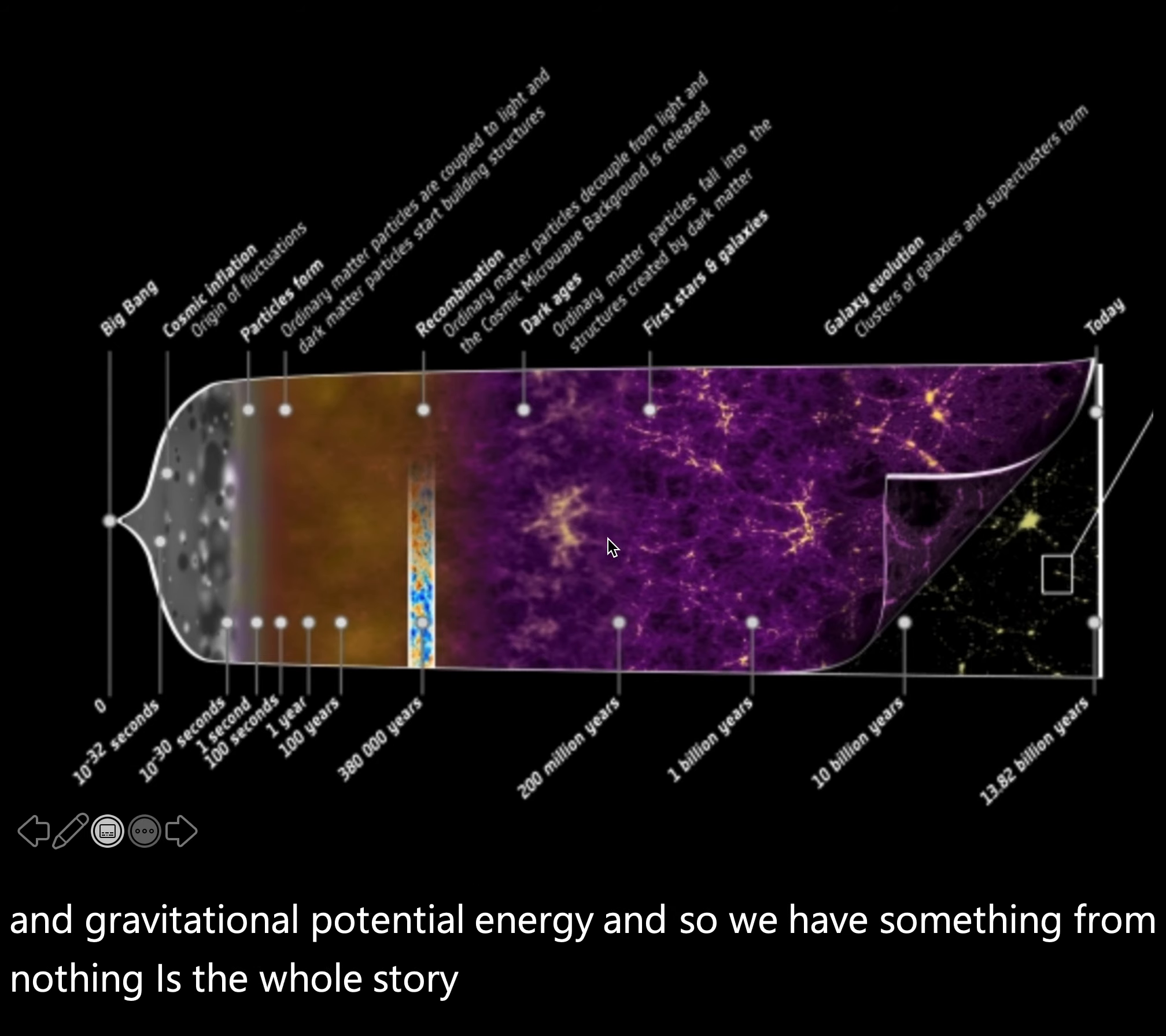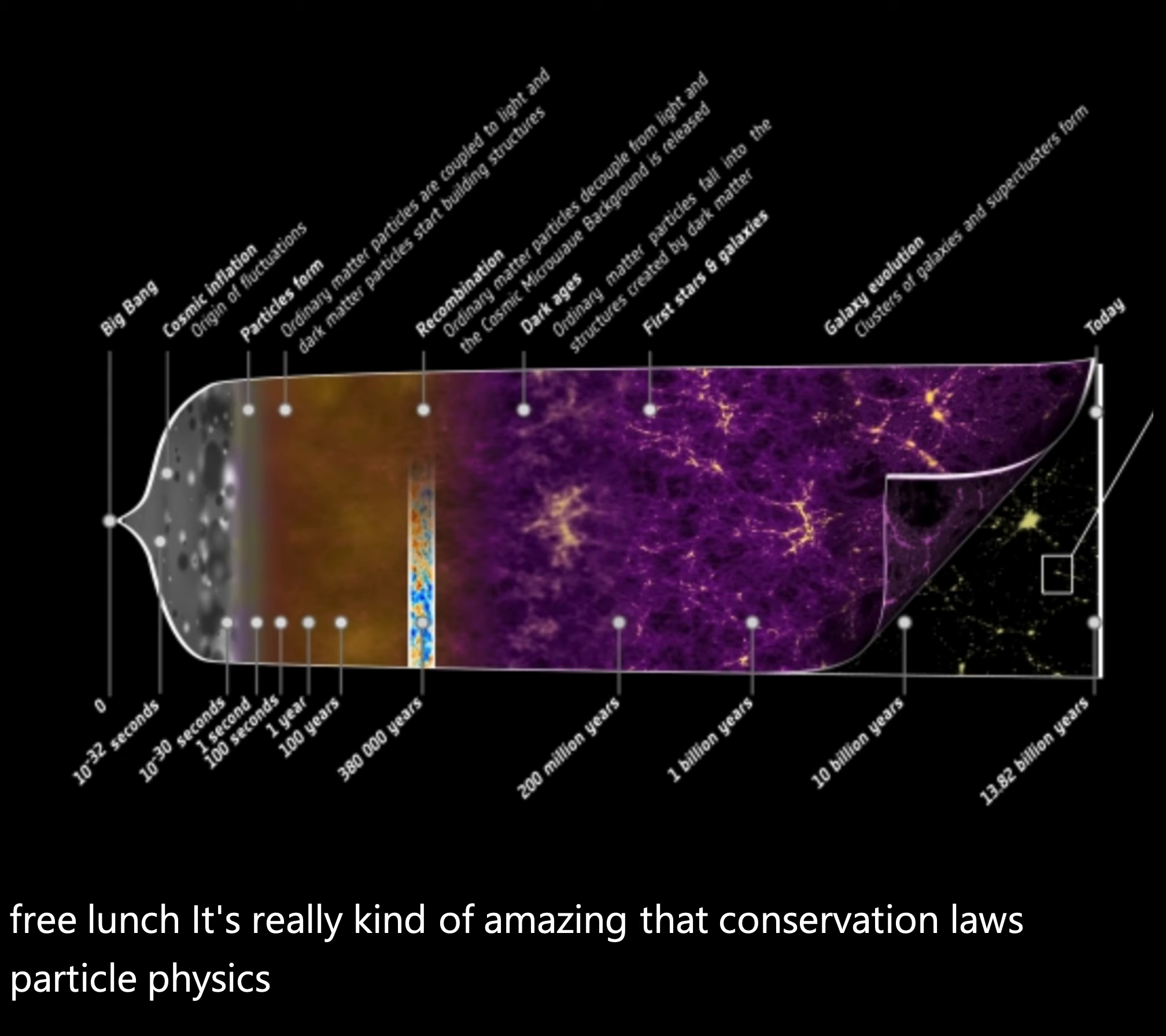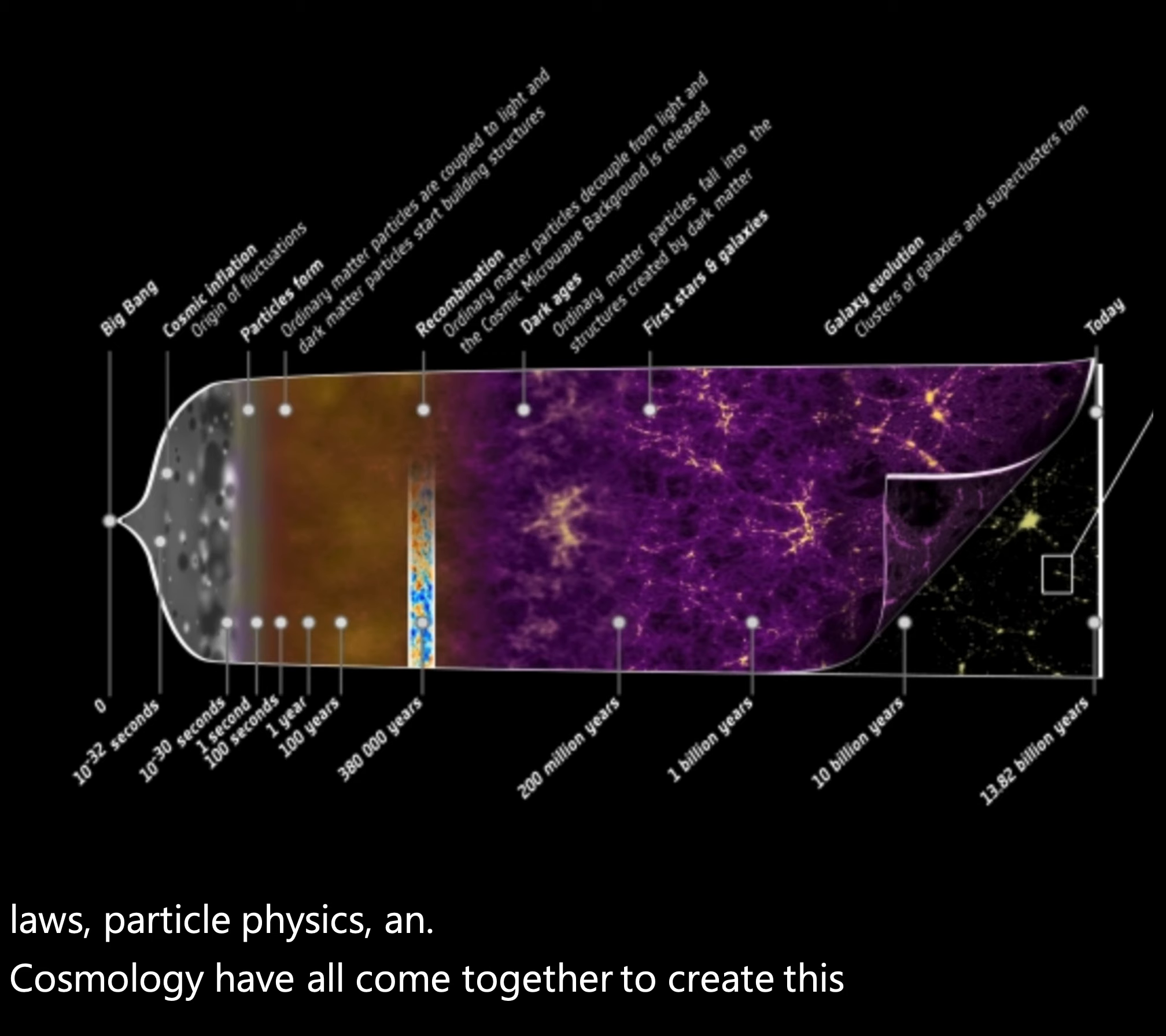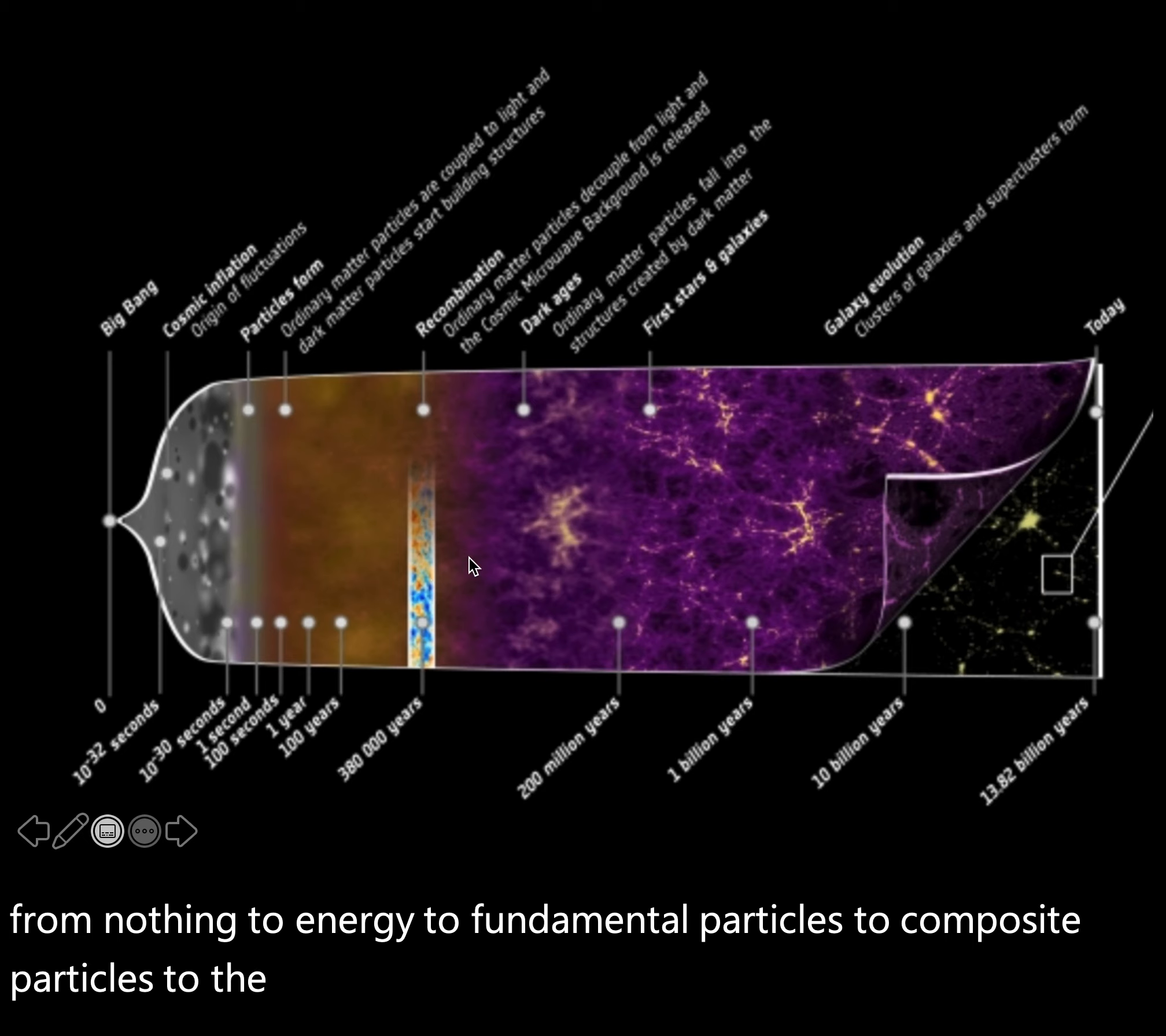So take all the mass in the universe, multiply it by c squared, you get an incredible positive amount of energy that you needed to have in the beginning in order to create all that mass. But all that positive energy is offset by all the negative energy and gravitational potential energy. And so we have something from nothing is the whole story. As Alan Guth said, the father of inflation theory at MIT, the universe is the ultimate free lunch. It's really kind of amazing that conservation laws, particle physics, and cosmology have all come together to create this explanation. So we have a pretty detailed understanding here of how we go from nothing to energy, to fundamental particles, to composite particles, to the building block elements of the universe, to the modern structure we have.